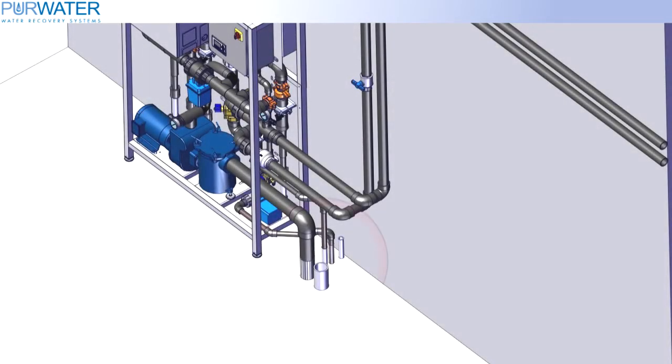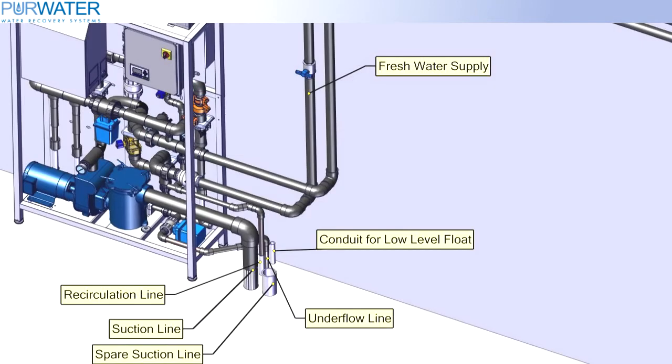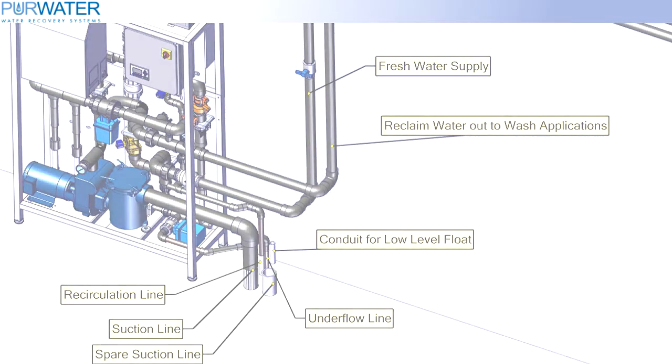All of the reclaimed plumbing should land on the right side of the reclaimed system. You will have a suction line, a spare suction line in case there is an issue with the other, a recirculation line, an underflow line, and a conduit for a low-level float connection. On the wall or close to the reclaimed system, you will need a freshwater connection, and lastly, the product water or reclaimed water line that will feed to your wash applications. Do not reduce this line size until reaching the wash equipment to prevent flow restriction and pressure reduction.